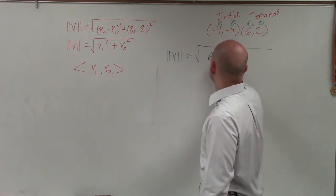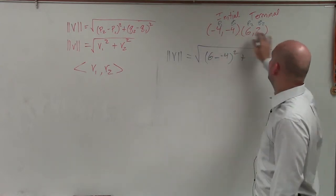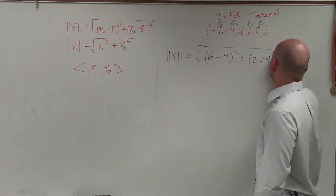So I'll do P2, which is 6 minus negative 4 squared, plus Q2 minus Q1, which is 2 minus negative 4 squared.